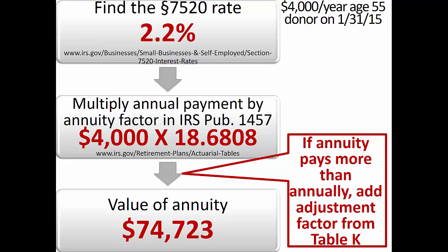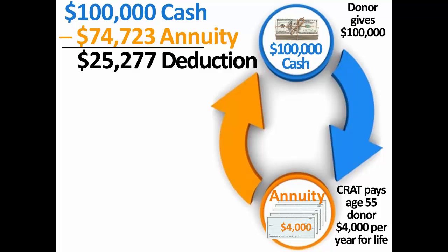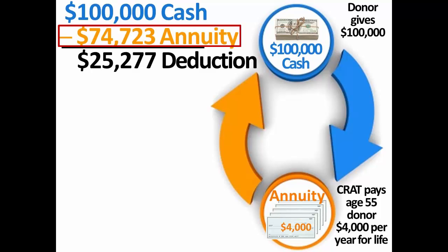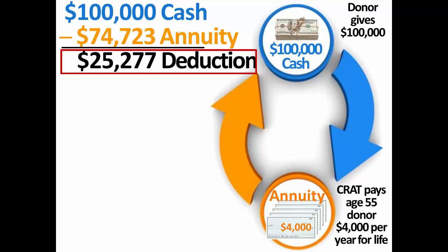Because payments received earlier could presumably be invested to earn additional interest, the annuity is worth more if the annuitant receives payments earlier. Just as with the charitable gift annuity, the calculation of the charitable income tax deduction is simply the amount of the transfer, $100,000, less the value of the annuity, $74,723.20, for a total deduction of $25,276.80.